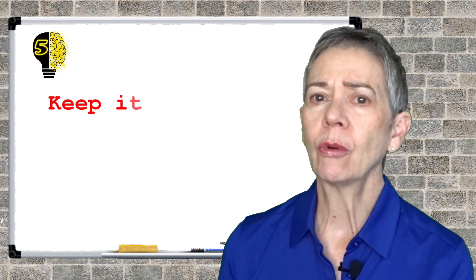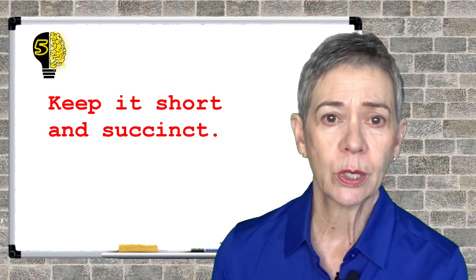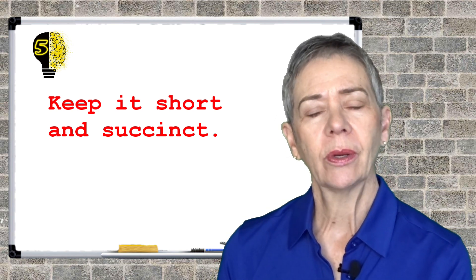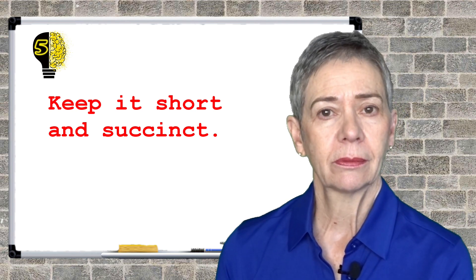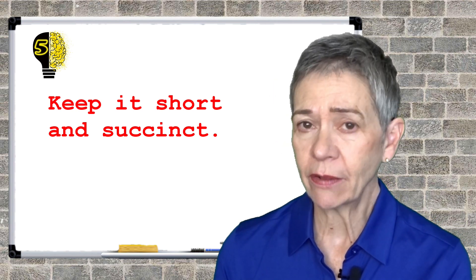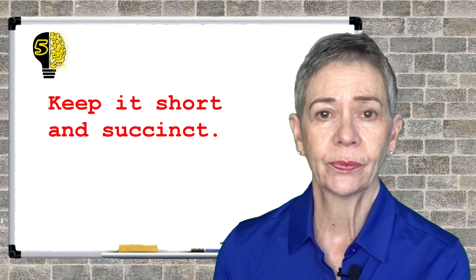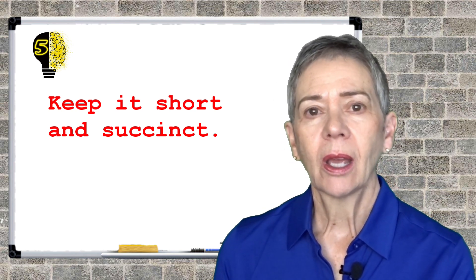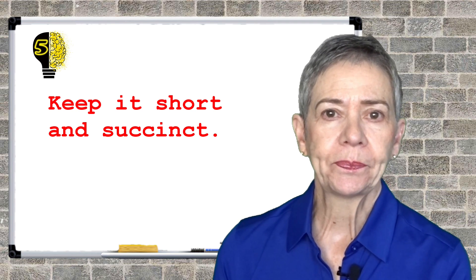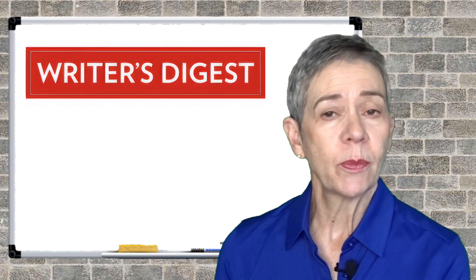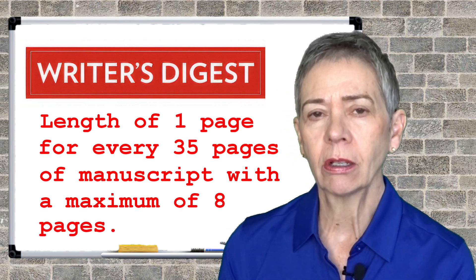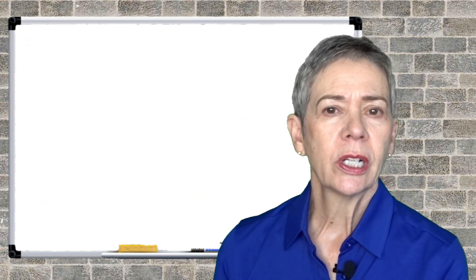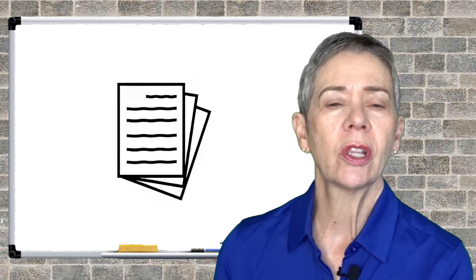Tip number five: keep it short and succinct. Short and succinct is a little imprecise and can be a challenge — how do you keep a complicated story or nonfiction book succinct while still covering all the high points? Writer's Digest suggests one page for every 35 pages of manuscript, with a maximum of eight pages. That's actually quite long. Many agents and publishers suggest keeping it to two to three pages.